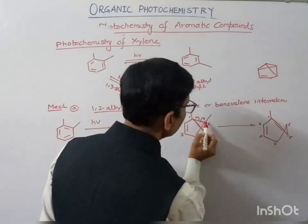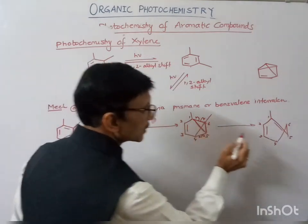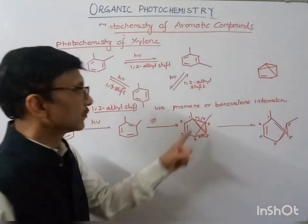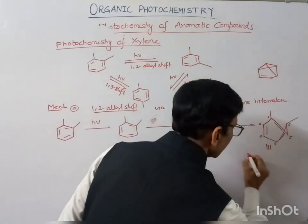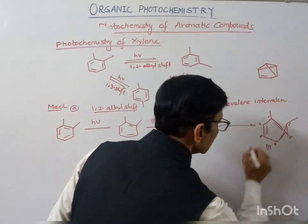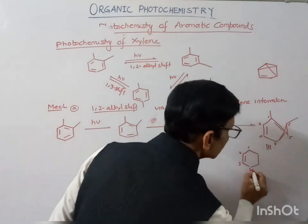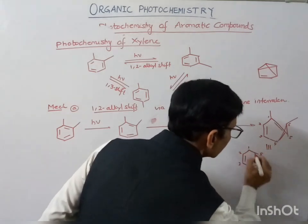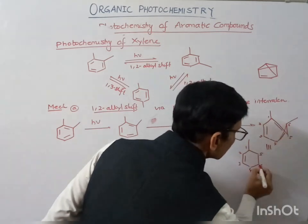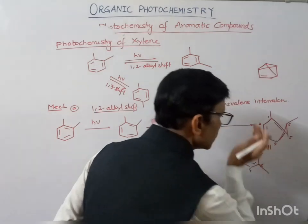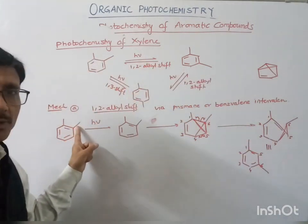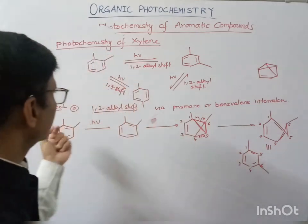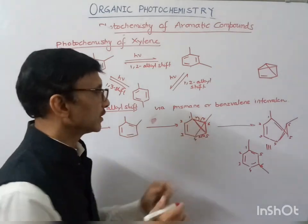Suppose we break this bond and this bond: a radical is present here and here. This radical at C4 and C6 may form a double bond. With one alkyl group at this position, rearranging gives us: C1-C2-C3-C4, from C4 the C6 carbon, and from C1 the C5 carbon is attached, and from C1 this alkyl group. At C6 we also have an alkyl group. This rearranged product shows the 1,2-alkyl shift via benzvalene intermediate.